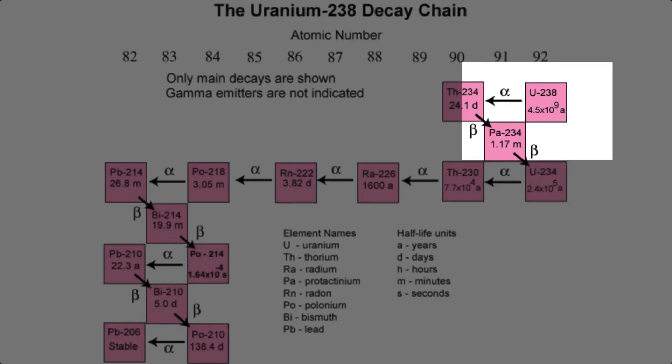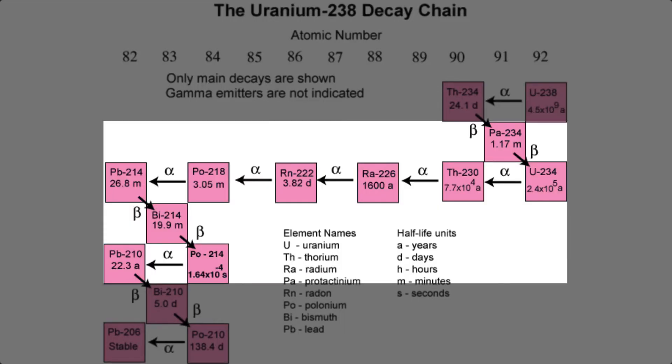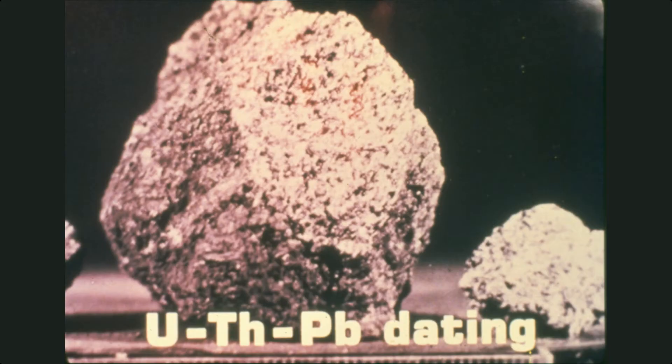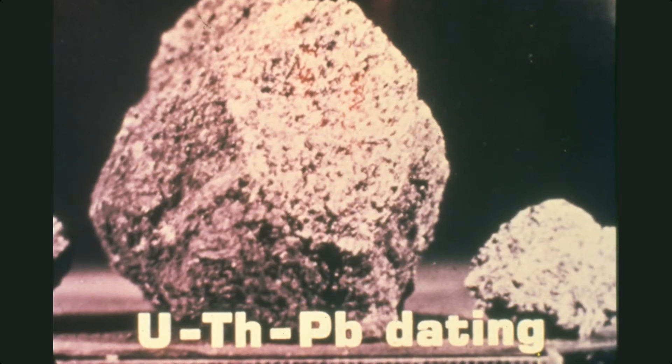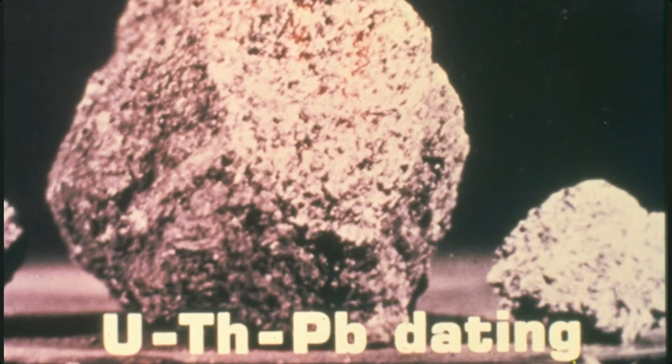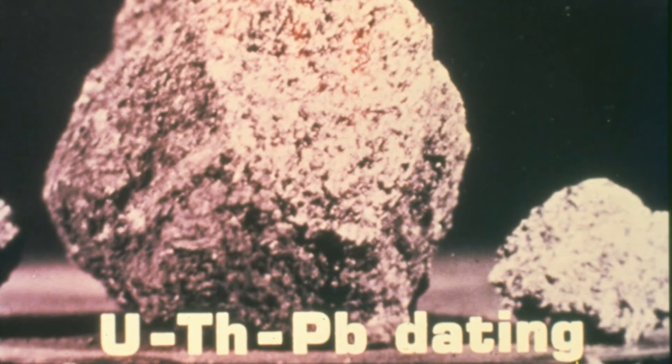The classic radiometric dating system starts with uranium. Uranium breaks down through many stages of nuclear decay until it becomes a stable kind of lead. Radiometric dating computes the amount of parent element — in this case uranium — and the amount of daughter element — in this case lead. You assume there was no daughter element in the rock to begin with, and you work out how long it would have taken to get that much daughter element, assuming nothing moved in or out, and assuming everything was always happening just as it does today.